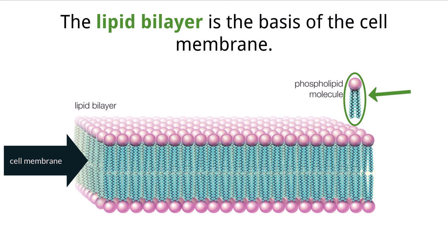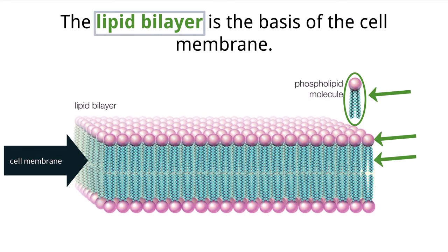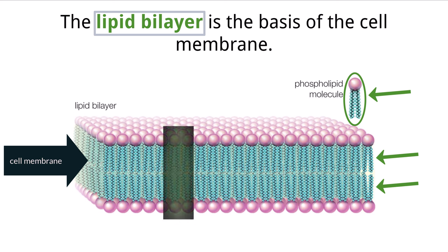These phospholipids are oriented in a way that creates a bilayer, or a two-layer membrane of phospholipids. In addition to phospholipids, there are many other substances embedded within the bilayer that serve specific functions and can contain both polar and nonpolar parts.